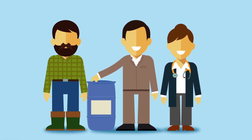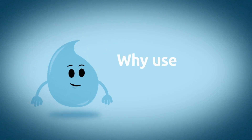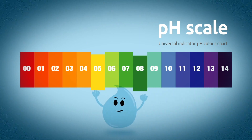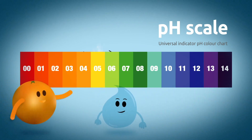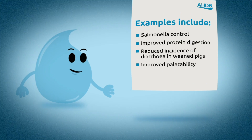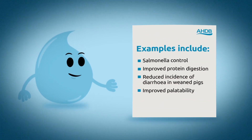If you use the wrong product, you may not see the results you expect. As a general rule, the pH of drinking water supplied to pigs should range between pH 5 to 8. However, there may be occasions when including organic acids in the water may have health and production benefits.